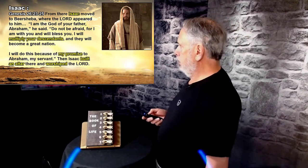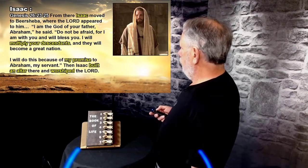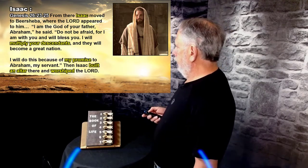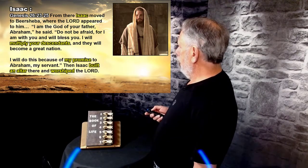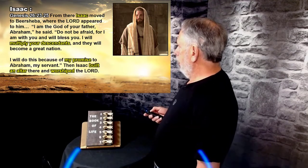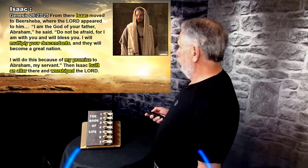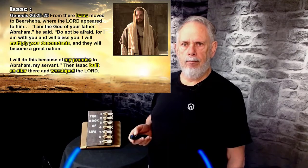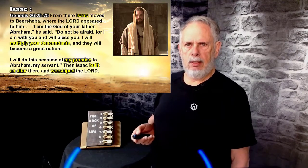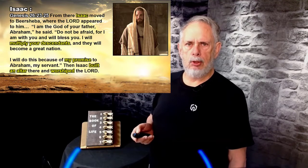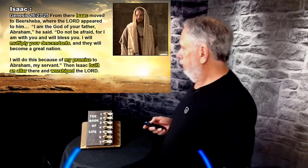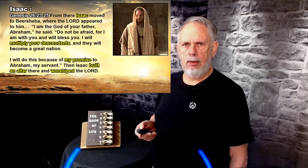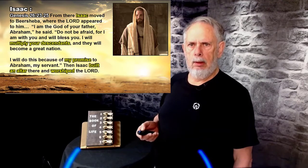In Genesis 26, Isaac moved to Beersheba where the Lord appeared to him and said: 'I am the God of your father Abraham. Do not be afraid, for I am with you and will bless you. I will multiply your descendants and they will become a great nation — because of my promise to your father Abraham my servant.' Then Isaac built an altar there and worshiped God.